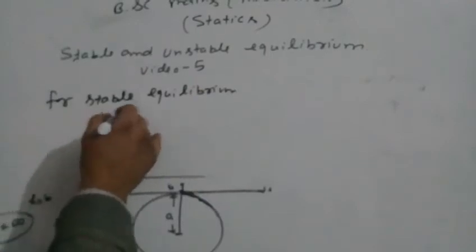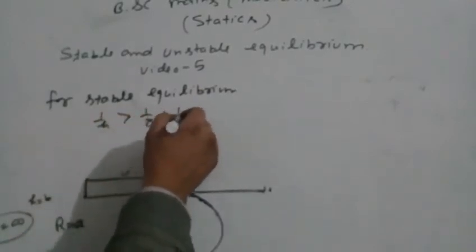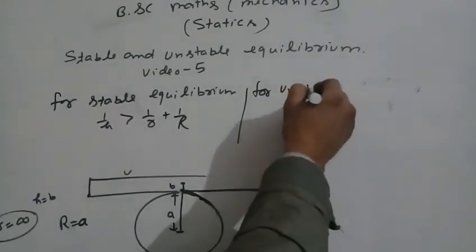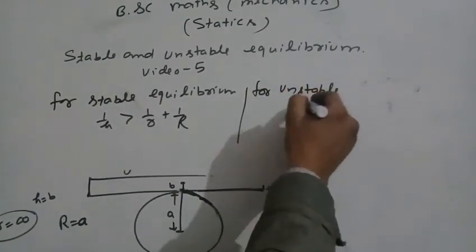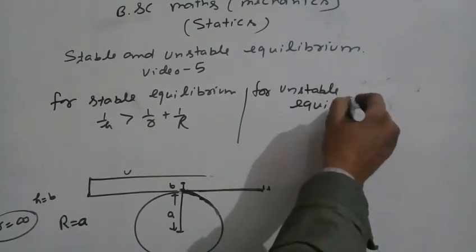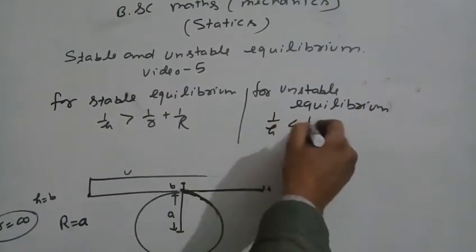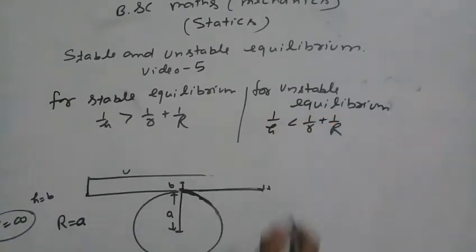And for unstable equilibrium: 1/h is less than 1/r plus 1/R. Where 1/r equals 1/a equals infinity, and h equals b.